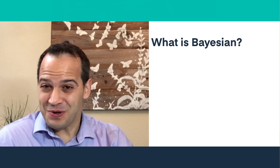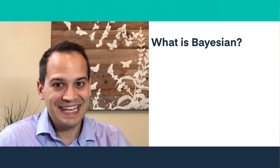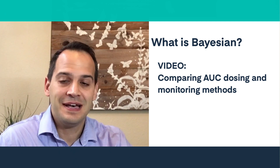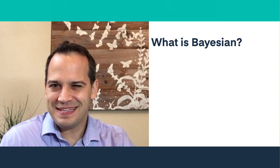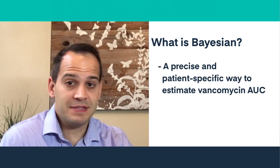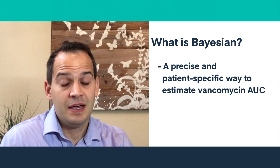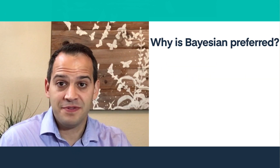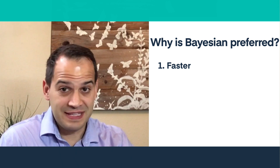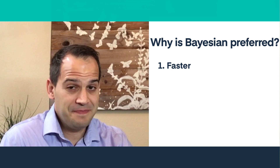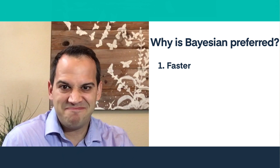Now let's talk about the Bayesian dosing method. If you're wondering what Bayesian guided dosing is, you can check out our video entitled Comparing AUC Dosing and Monitoring Methods. To summarize quickly, Bayesian guided dosing is a precise and patient-specific way to estimate vancomycin AUC. In addition to that precision, there are a few other reasons Bayesian software is preferred. One: Bayesian dosing is faster. With an EHR-integrated Bayesian dosing system, AUC dosing and monitoring become more efficient.